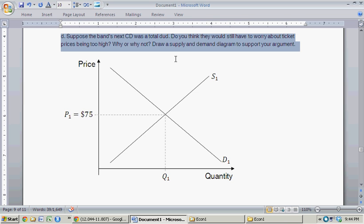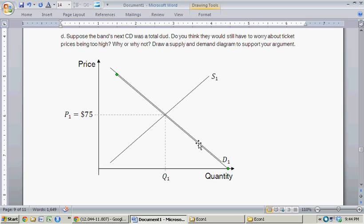that would mean when they go back on to the tour circuit, there's going to be fewer people demanding to see them live. Because, you know, if their album's a big hit, you usually get this big increase in demand to see the live performance. But if the CD was a dud, then fewer people would be demanding at any given price. So that reflects an inward shift in the demand curve.